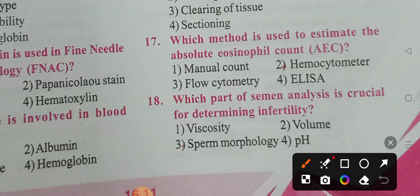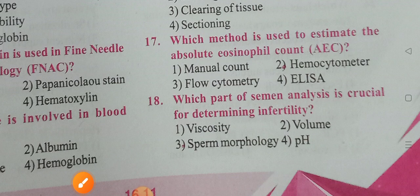Question eighteen: Which part of semen analysis is crucial for determining infertility? Options: viscosity, volume, sperm morphology, pH. That concludes questions 1 to 18 of the model question paper. Thank you all for watching. Have a nice day, bye bye, see you in the next video.